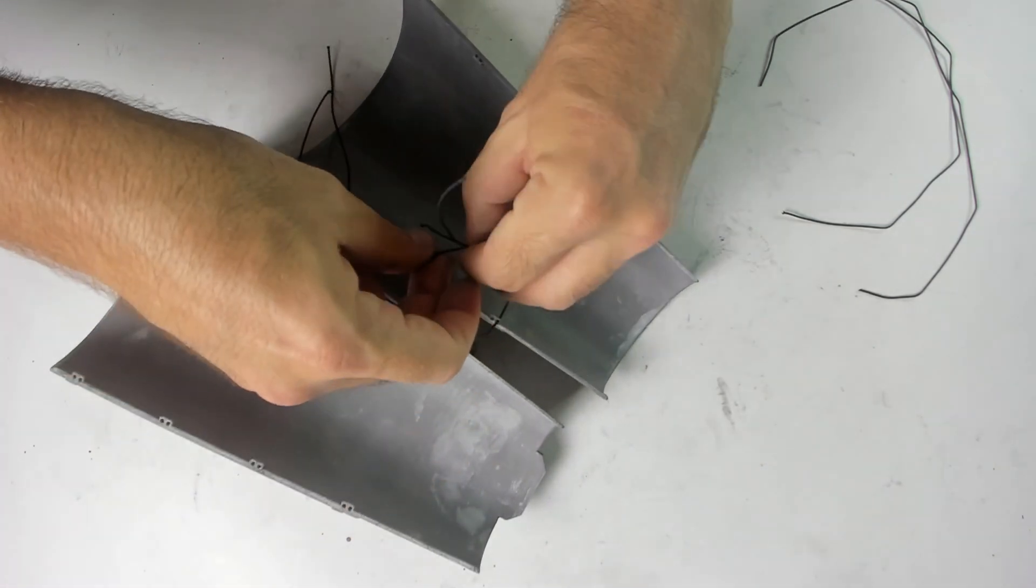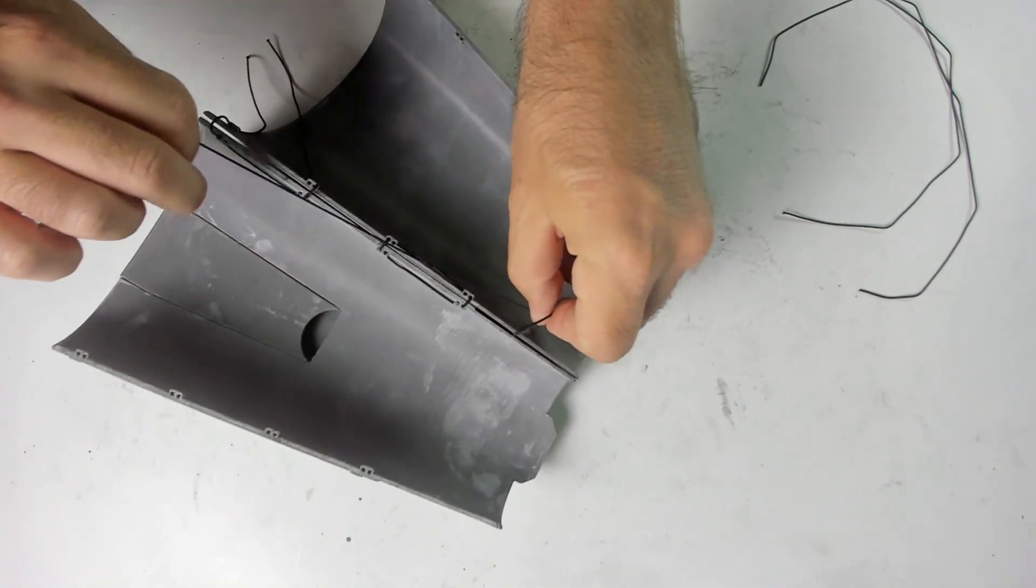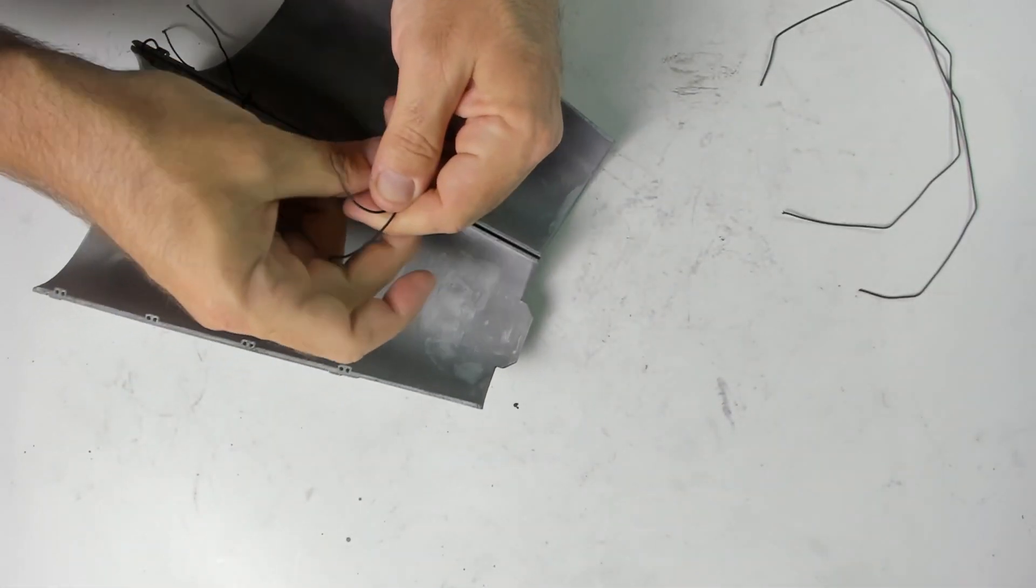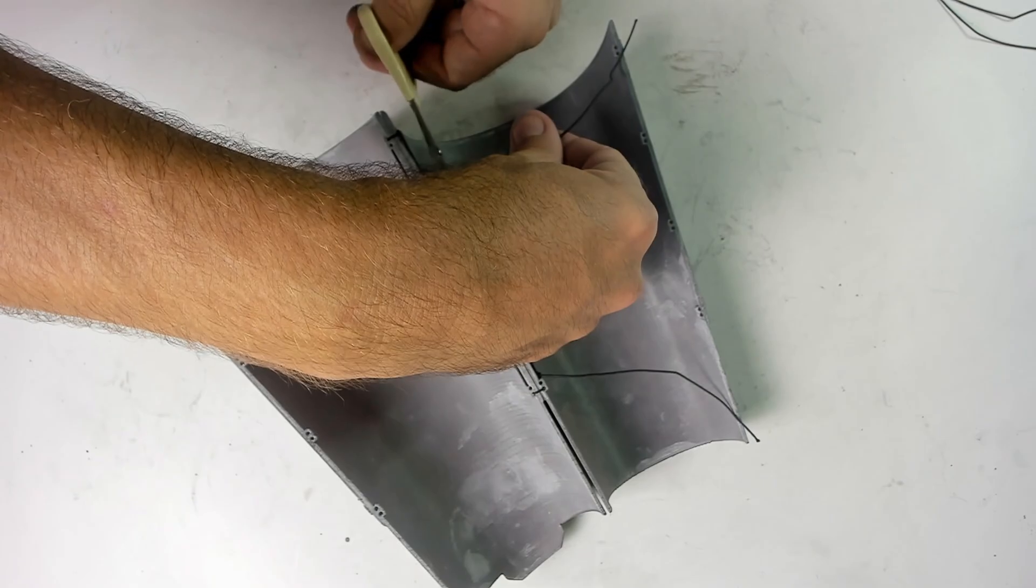Now I tie the first set together in a loop. You want to make sure to pull it tight with no slack so it'll hold the two halves together. And then I do the same to the other cord. Now I just cut off the excess.